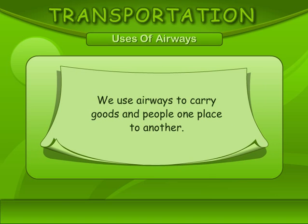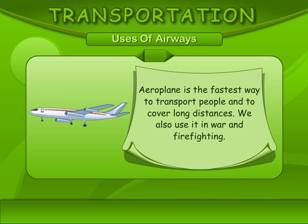Use of airways. We use airways to carry goods and people from one place to another. Airplane. An airplane is the fastest way to transport people and to cover long distances. We also use airplanes in war and firefighting.